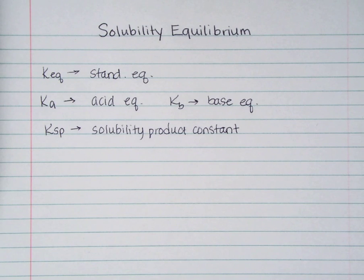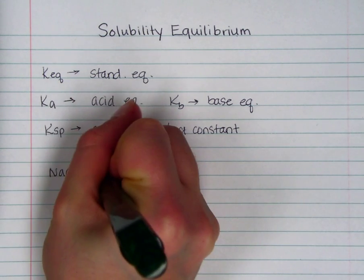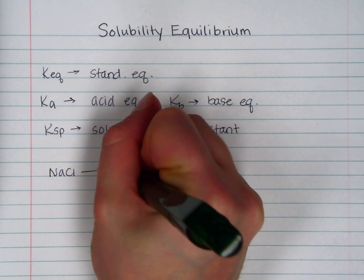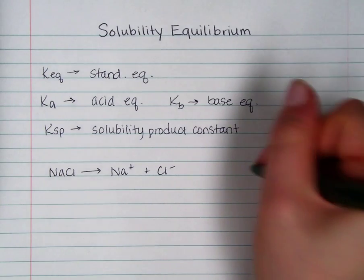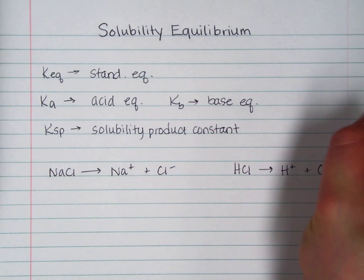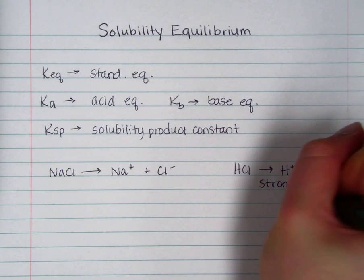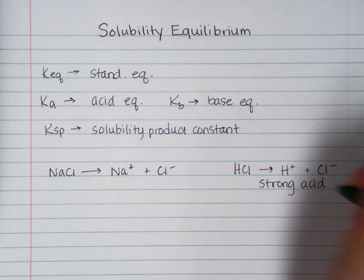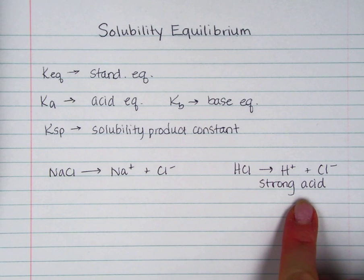Now here's the analogy I would give you. NaCl completely dissolves in water to form Na+ and Cl-. Just like HCl completely ionizes in water to form H+ and Cl-. This is a strong acid, so we say its KA is very large and we really don't write the KA for it because it completely dissociates.